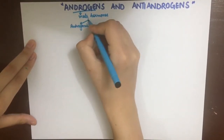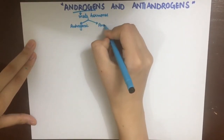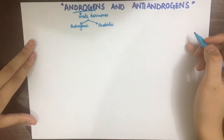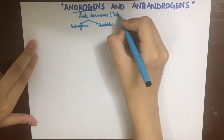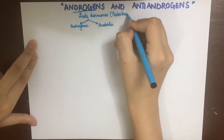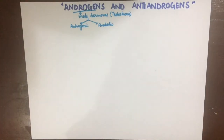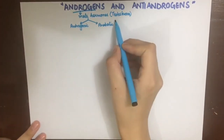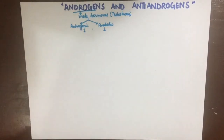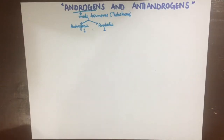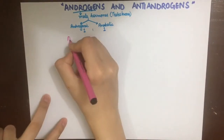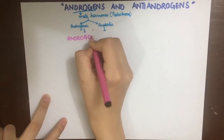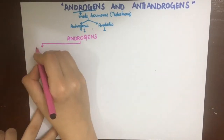The androgenic function includes secondary male sexual character development and maturation of the reproductive organs, while the anabolic role is its role in increasing the mass and strength of skeletal muscles and also its role in erythropoiesis. Testosterone has a ratio of anabolic to androgenic action of 1:1.